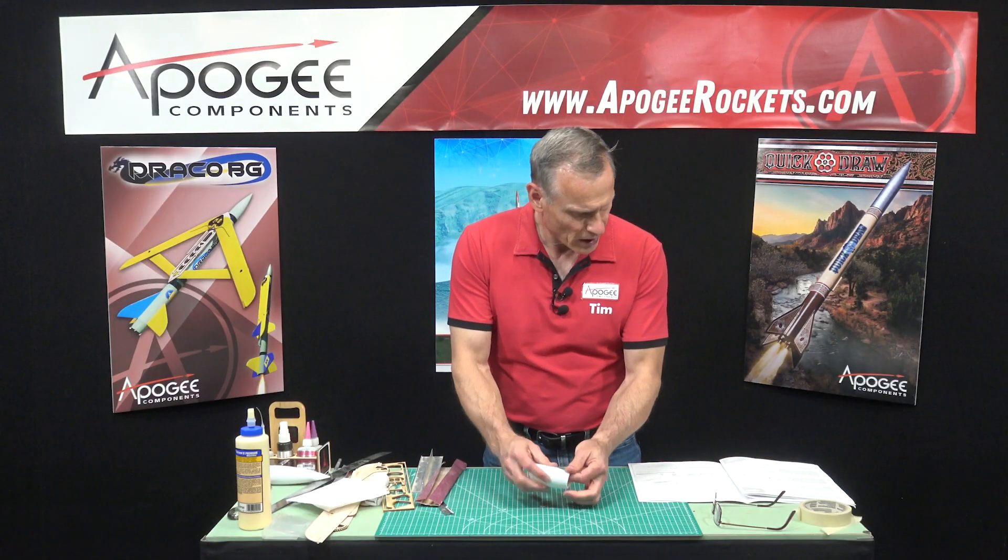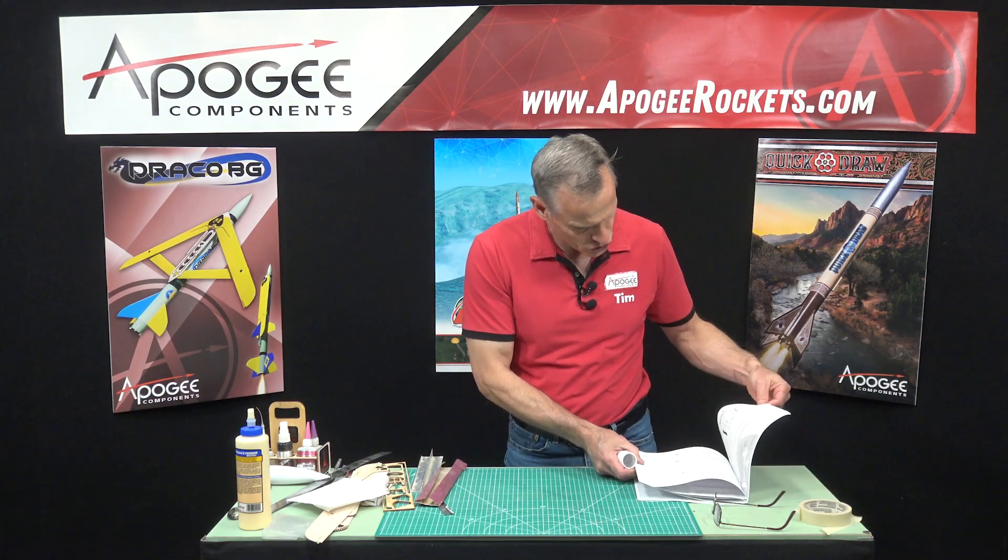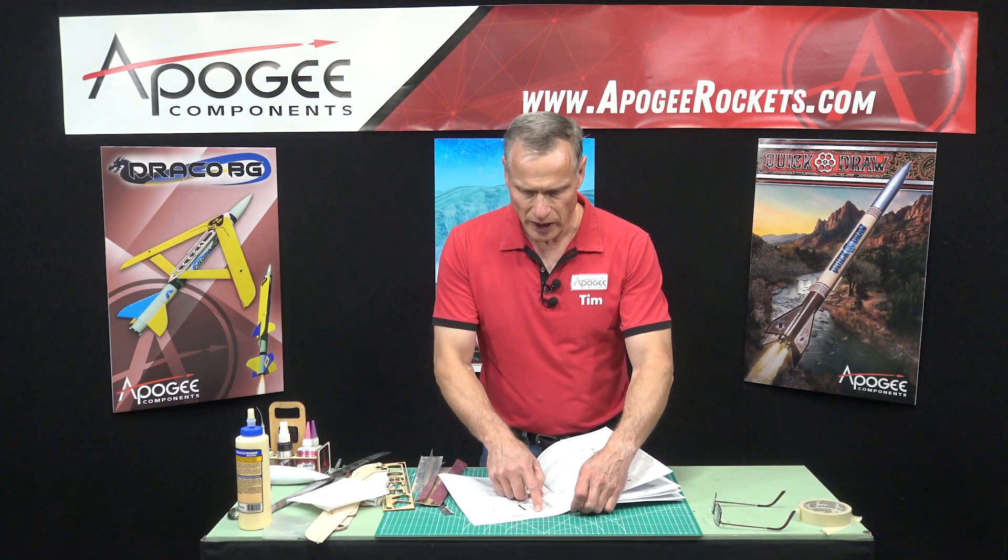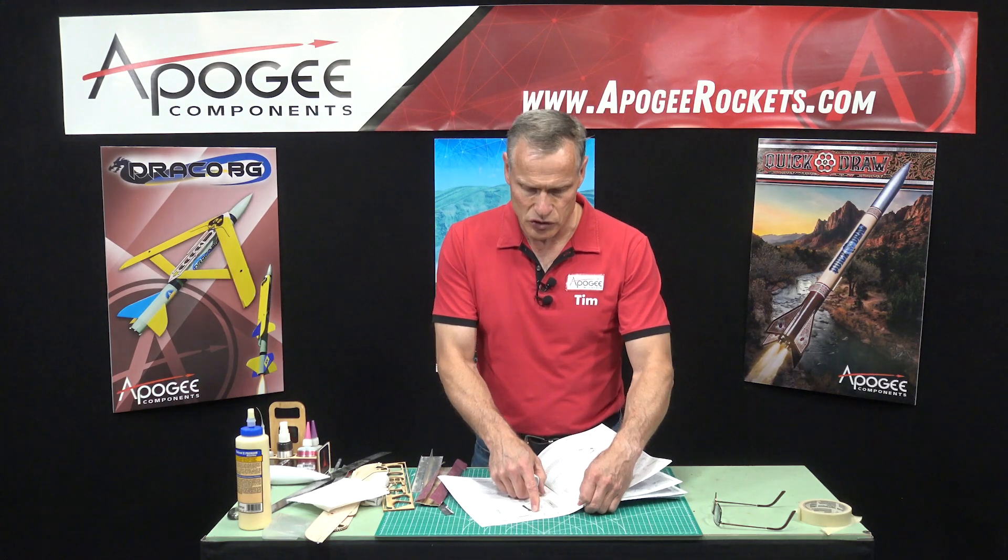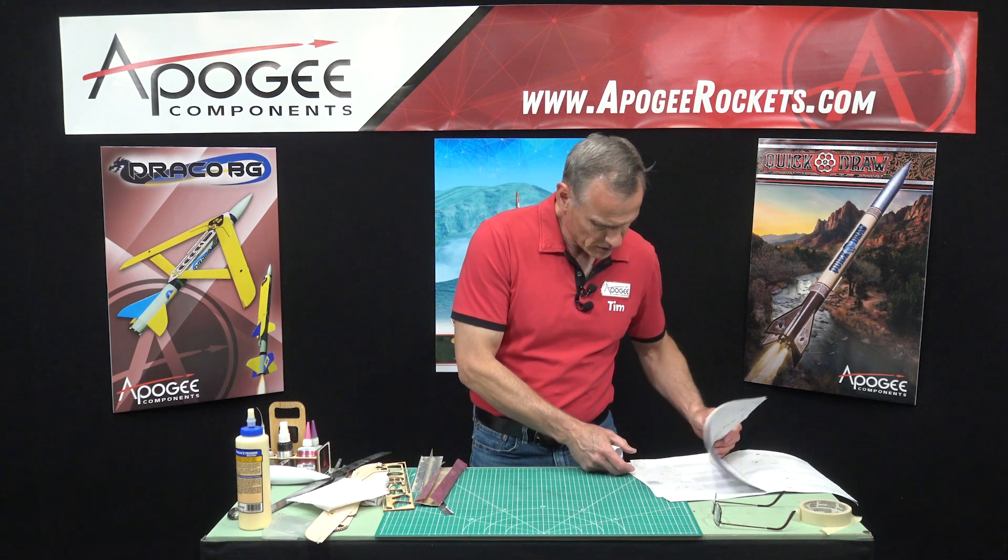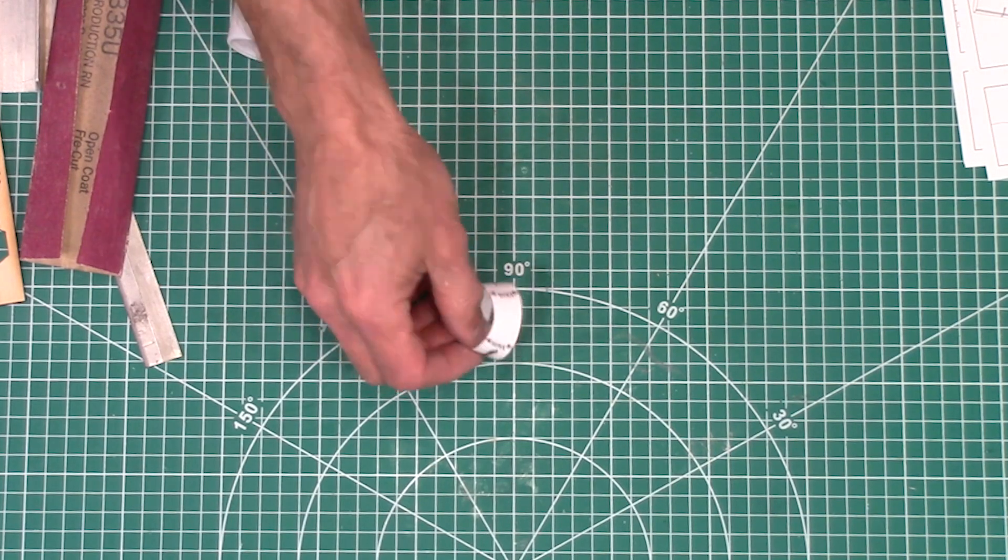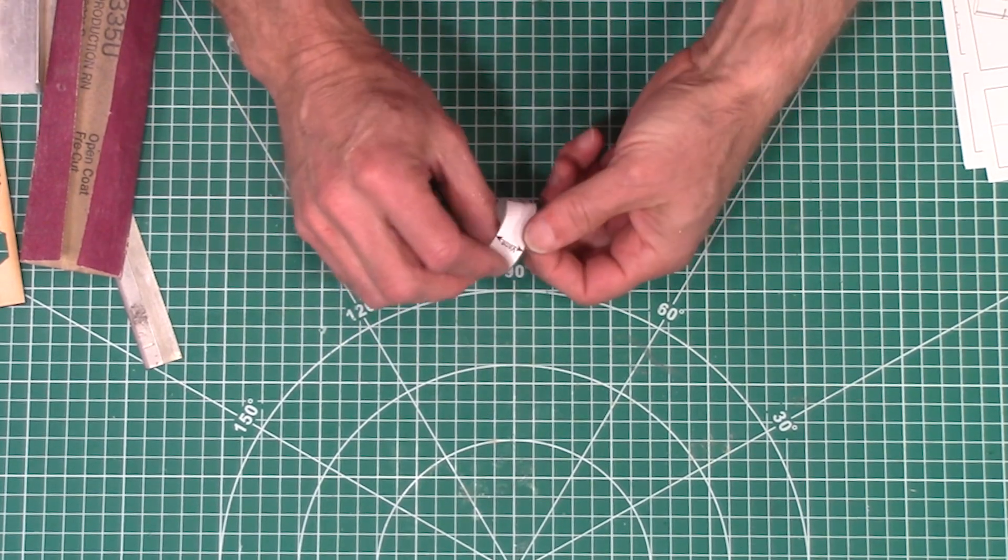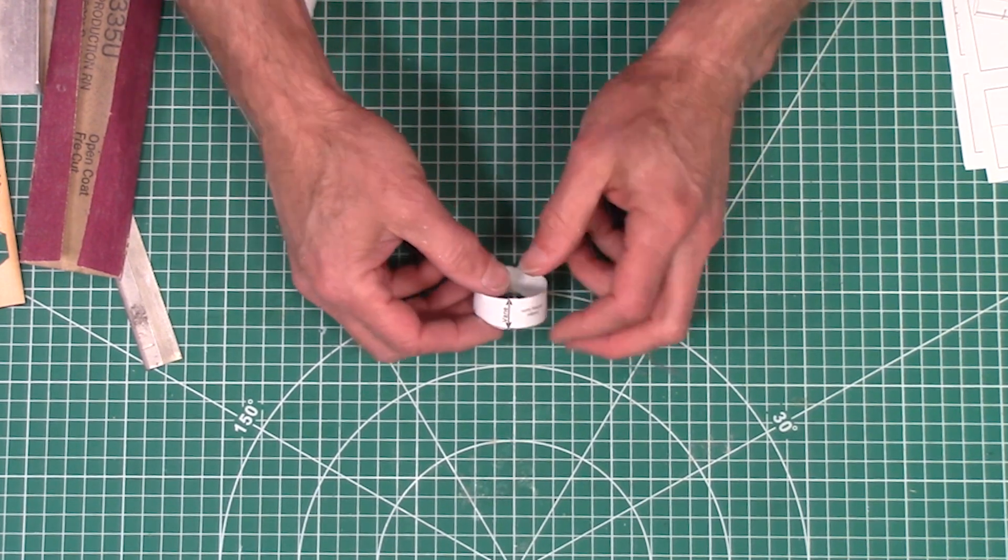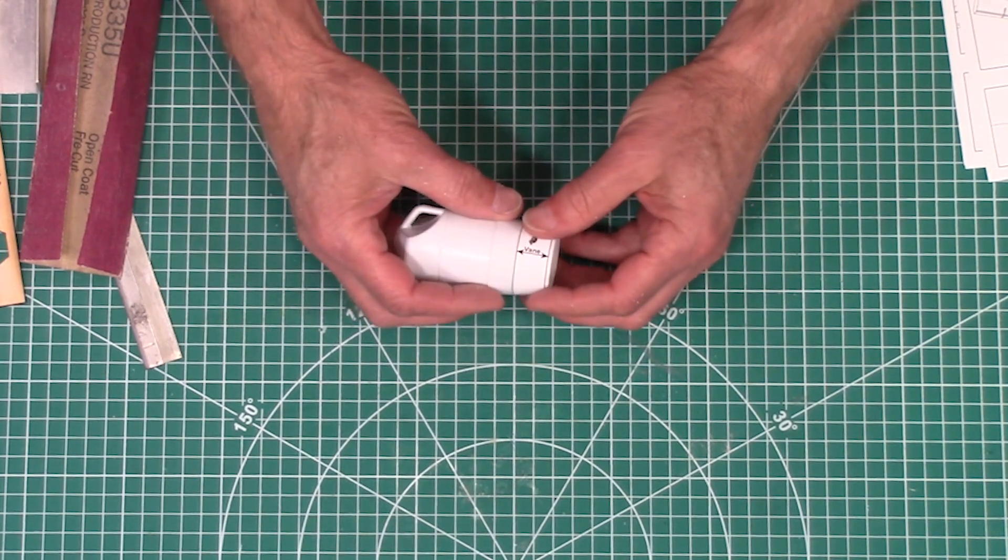Now from the instruction sheet on page two is this wrap and we need to cut that out of the instruction sheet and I've already gone ahead and done that. That is right here and I've gone ahead and glued the edges together which is right here. They've glued together and this is going to go onto the boat tail like that.